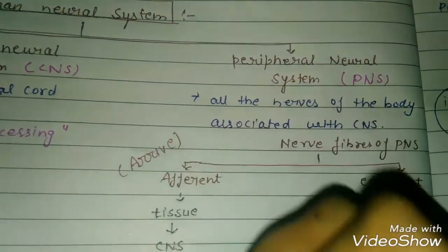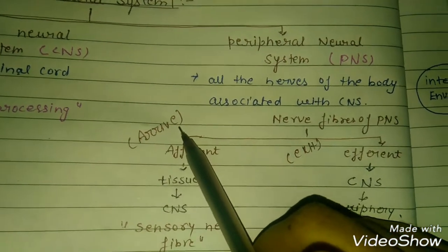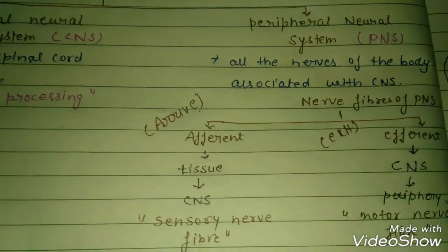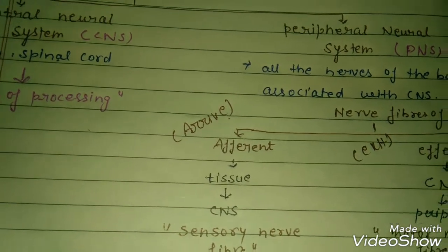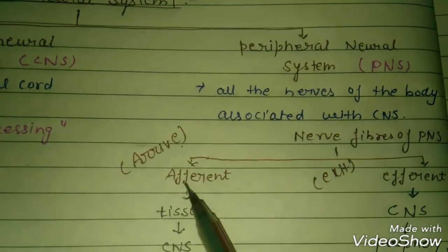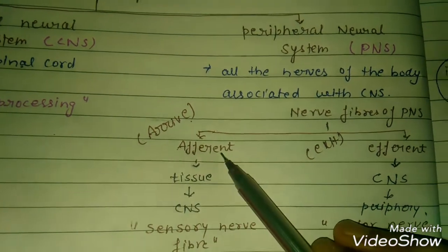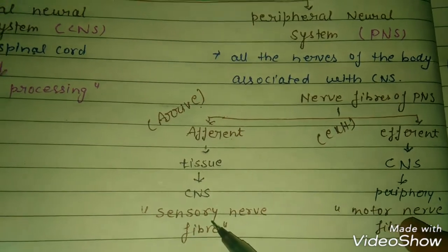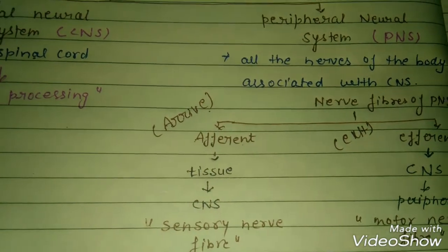There are two types of nerve fibers. Afferent means arrival — signals travel from tissue to the CNS. When a tissue is stimulated, signals arrive at the CNS via afferent, which are sensory nerve fibers. Efferent means exit — signals go out from the CNS. So afferent equals arrival equals sensory nerve fibers.